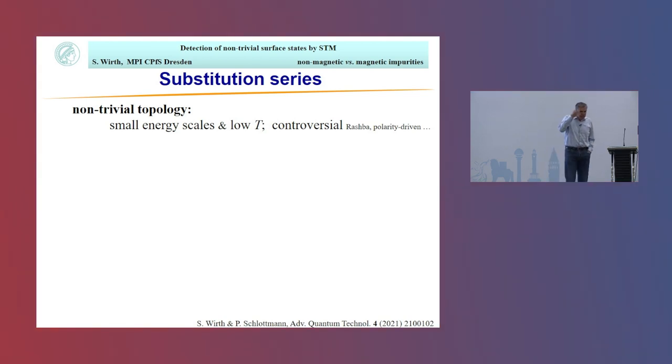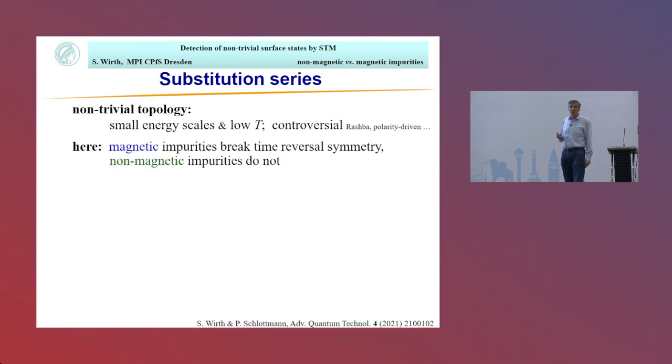Most importantly, we have this peak here at -6.5 millielectron volts, and that's what I'm going to focus on. It has some bulk contributions as shown by other measurements, but mostly it has surface contributions. The issue here is that most people nowadays believe samarium hexaboride is a topological insulator, but it's difficult to show because of the small energy scales involved. ARPES is pretty much at the limit, and there are controversial results.